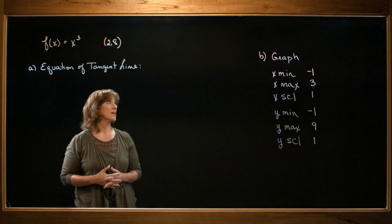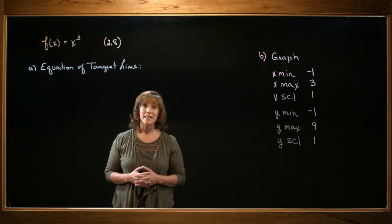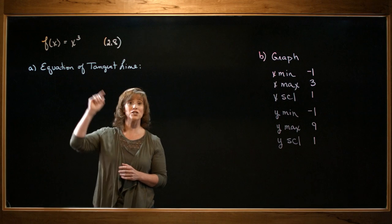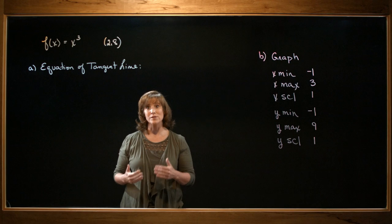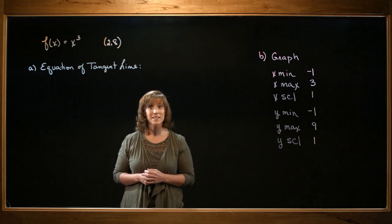After we find this, we're going to use a graphing utility to sketch the graph of both x cubed and our tangent line that we come up with, and then we're going to verify that our results that we got in part A were indeed correct.